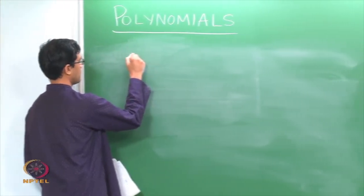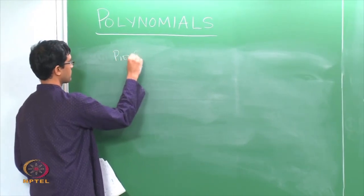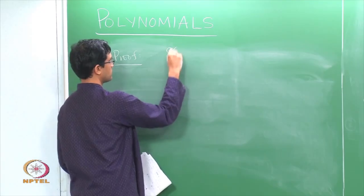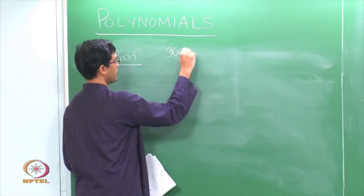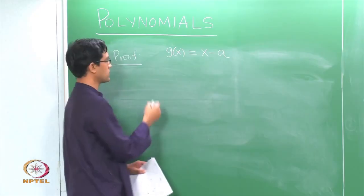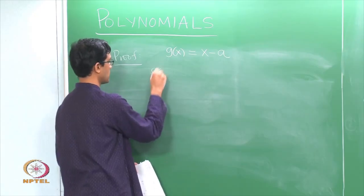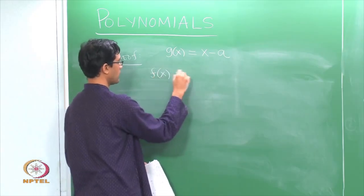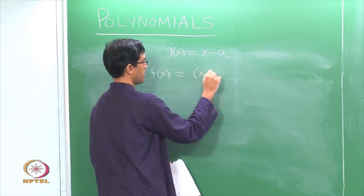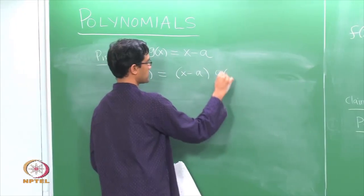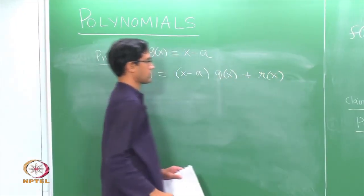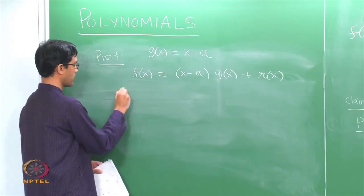So how do we prove this fact? Let us take g(x) to be (x − a) and just apply the long division or the division algorithm. It says when you divide f by g, f(x) can be written as g(x), which is (x − a), times a quotient plus a remainder.